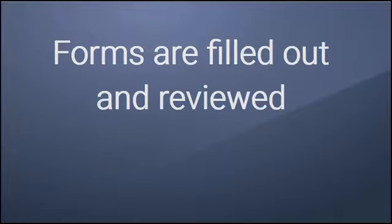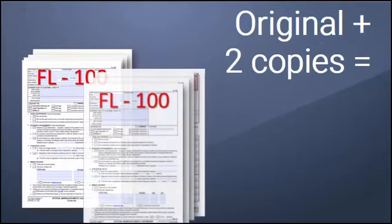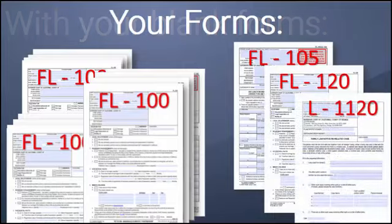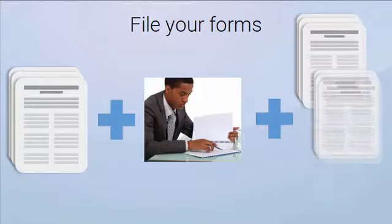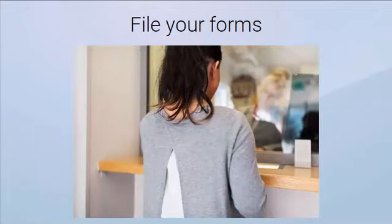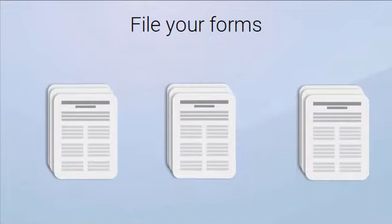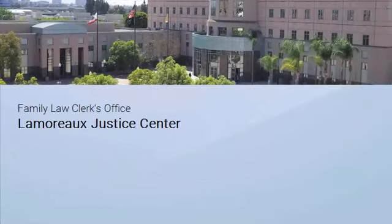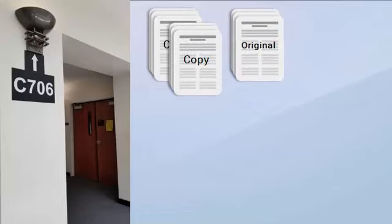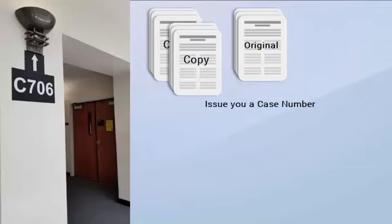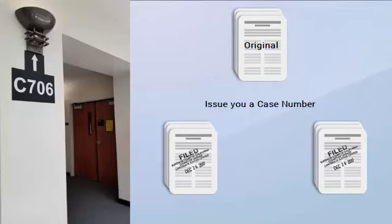Once the forms have been filled out and reviewed, you will need to take your original forms and make two copies of them, giving you a total of three form packets plus the blank forms. Now it is time to file them with the court. Take your three form packets and blank forms to the Family Law Clerk's Office at the Lamoreaux Justice Center in Orange, Room 706. If there are no obvious errors, the clerk will take the original of each form, issue you a case number, and return the two copies to you stamped 'Filed.' One of the copies is for your records and the other must be served on the respondent.